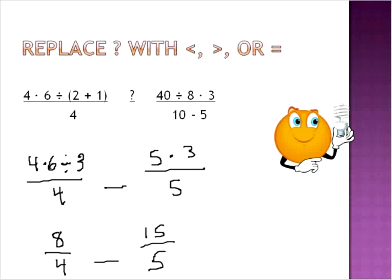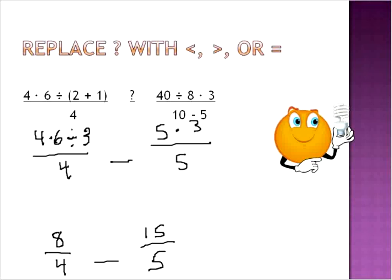And now I've run out of space, so that would be the next step. And we'll just shift those things up so that we can solve. 8 over 4 is 2, and 15 divided by 5 is 3. So in the end, we can put in the less than symbol because 2 is less than 3. That's going to be our final solution for this comparison.